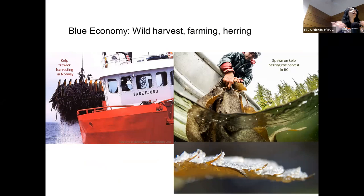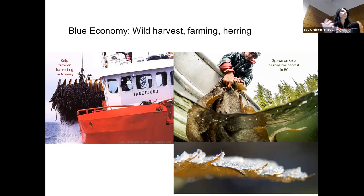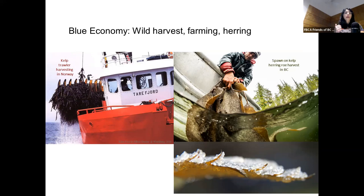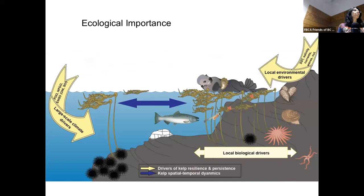Regarding the importance of kelp — in many parts of the world, not just in BC, we can have wild harvesting and farming. In BC specifically, herring spawn on kelp and herring roe is very strongly harvested — it's a big business and also a very important cultural practice. So there's a lot going on about kelp use, what we call the blue economy in British Columbia and around the world. The ecological importance of kelp is numerous.